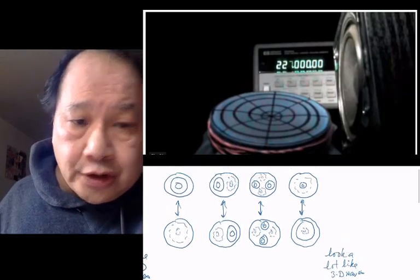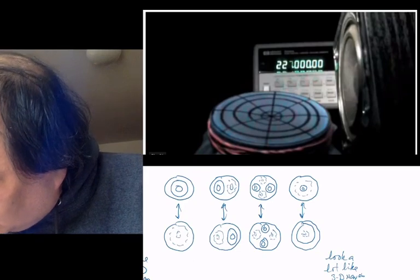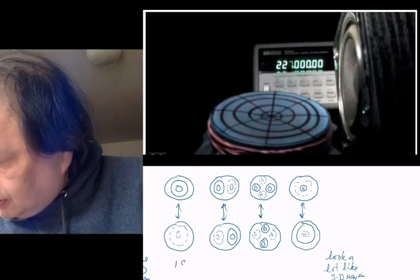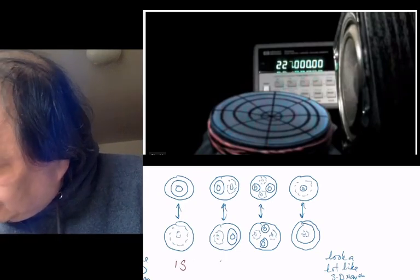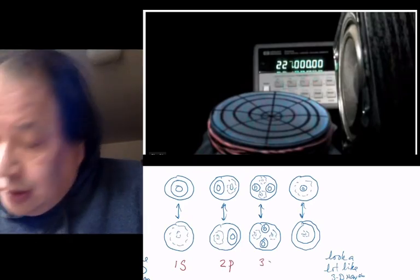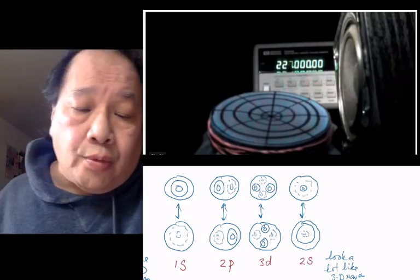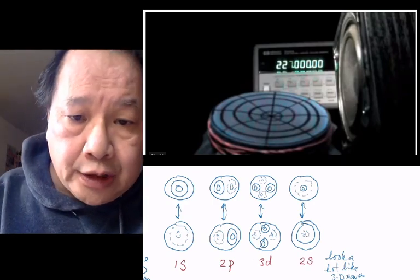And I'll give you the names, 1s. This one here is called 2p. This one is called 3d. And this one is called 2s. And we'll be talking about these four waves throughout today's lecture.